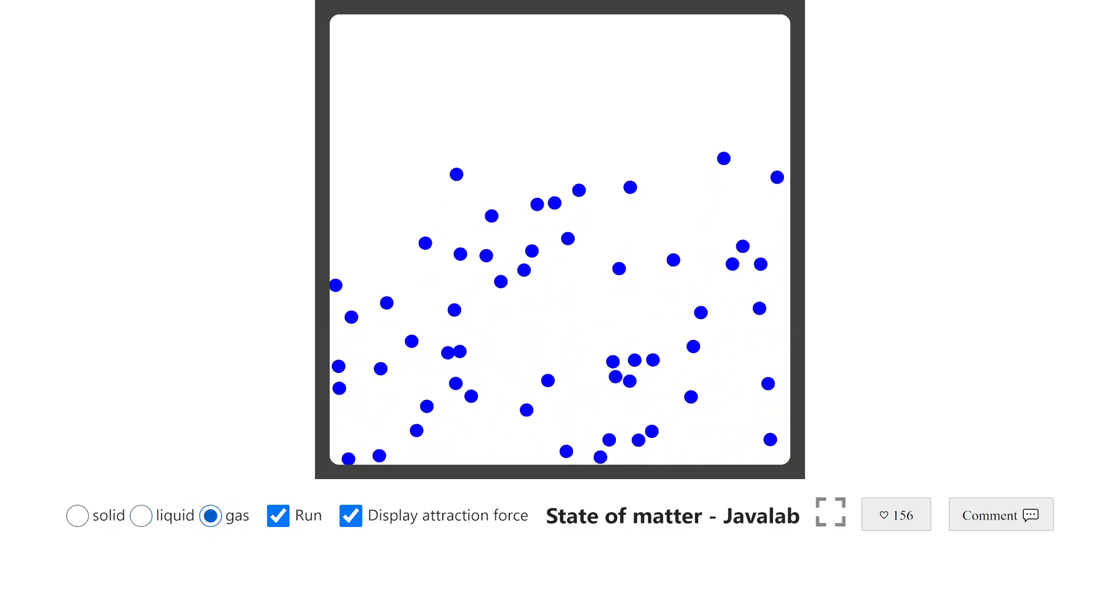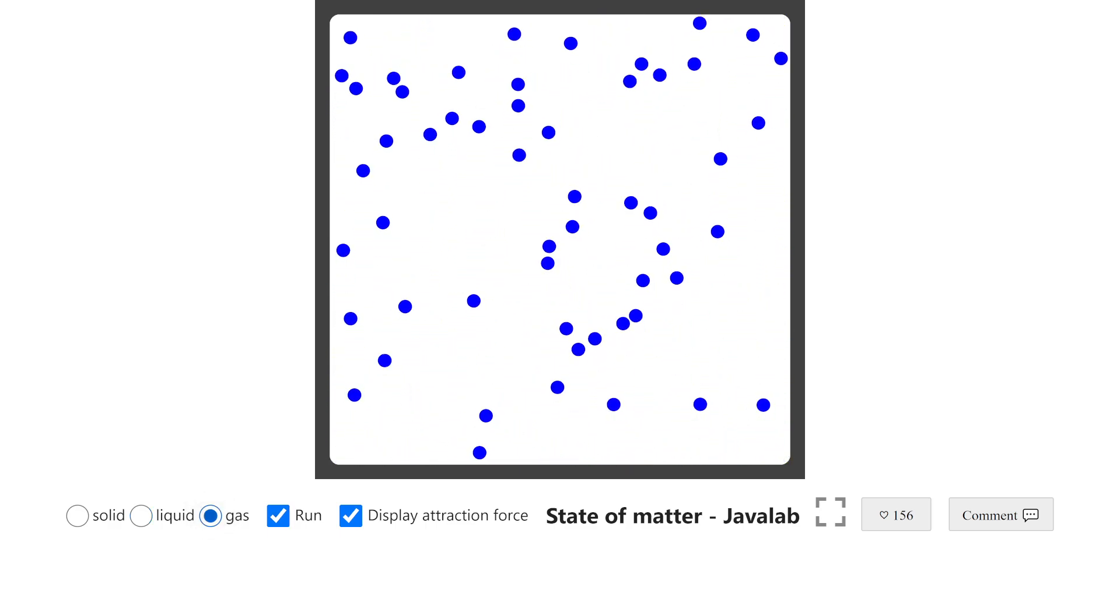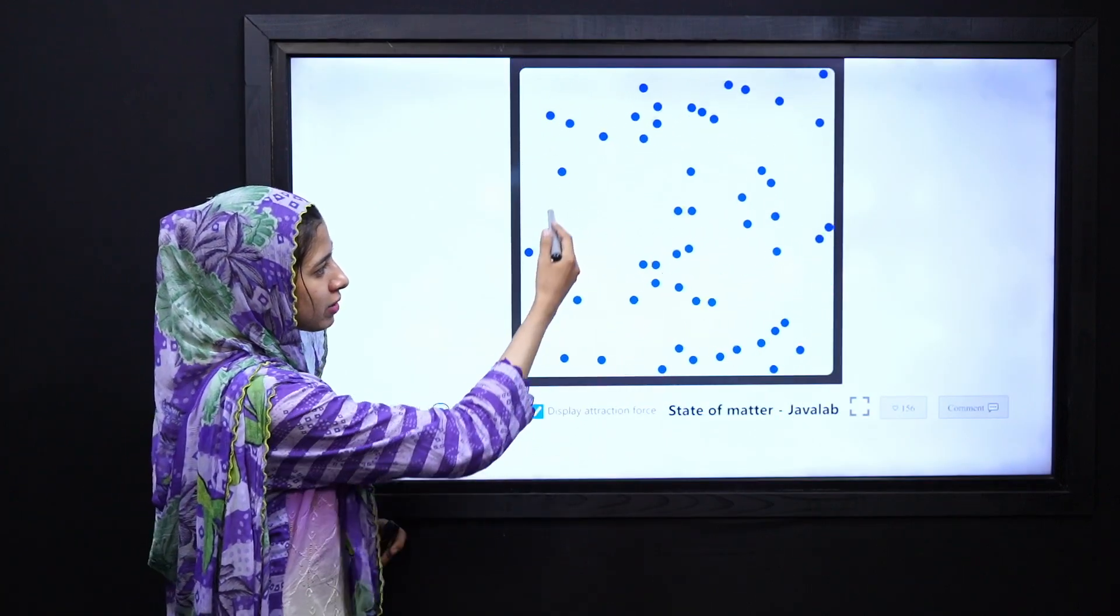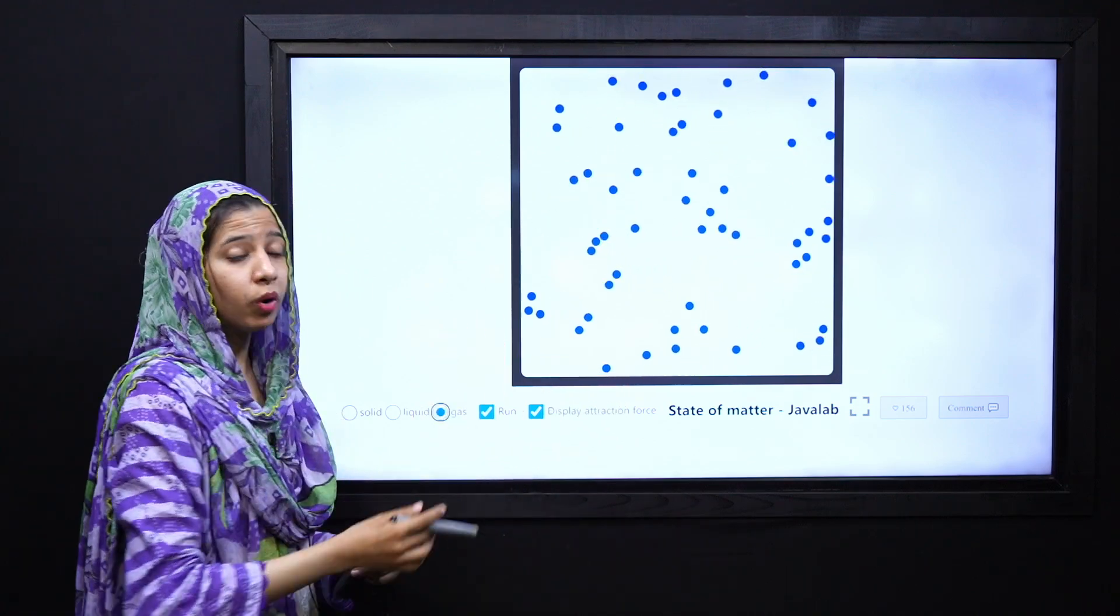If we look at gases, you can see that our particles have very much random motion. If we look at forces of attraction, they are very weak.